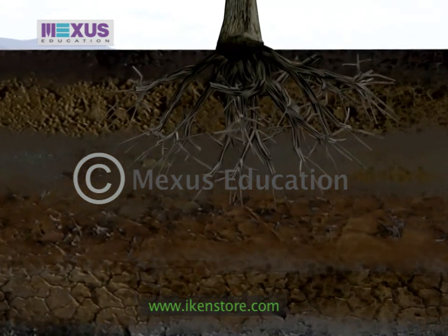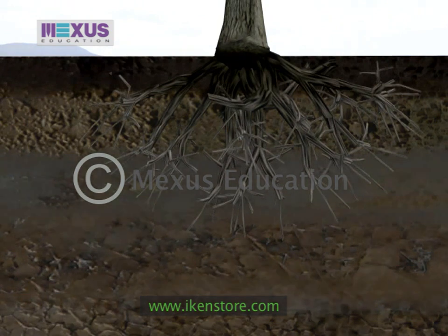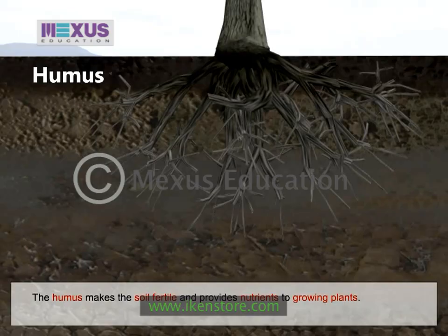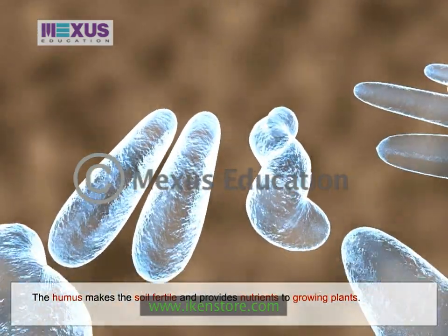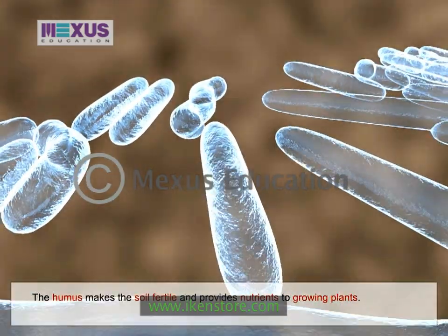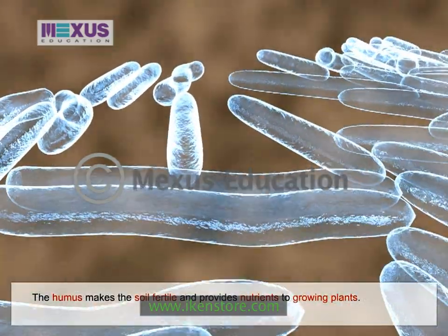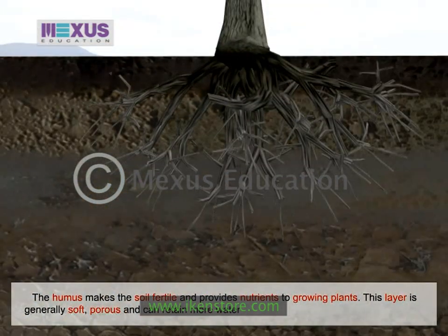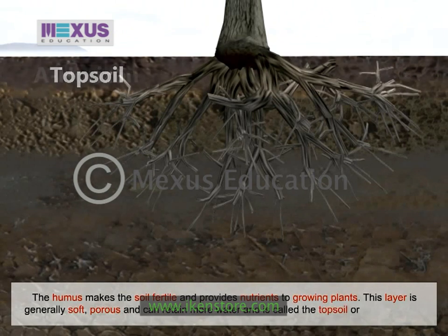The uppermost horizon is generally dark in colour as it is rich in humus and minerals. The humus, which is the rotting dead matter in the soil, makes the soil fertile and provides nutrients to growing plants. Single-celled bacteria or even fungi decompose organic matter to form humus. This layer is generally soft, porous and can retain more water. It is called the topsoil or the A-horizon.